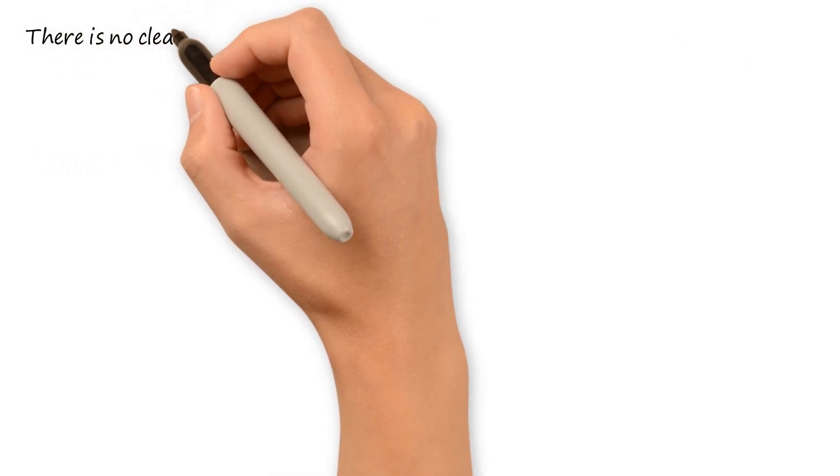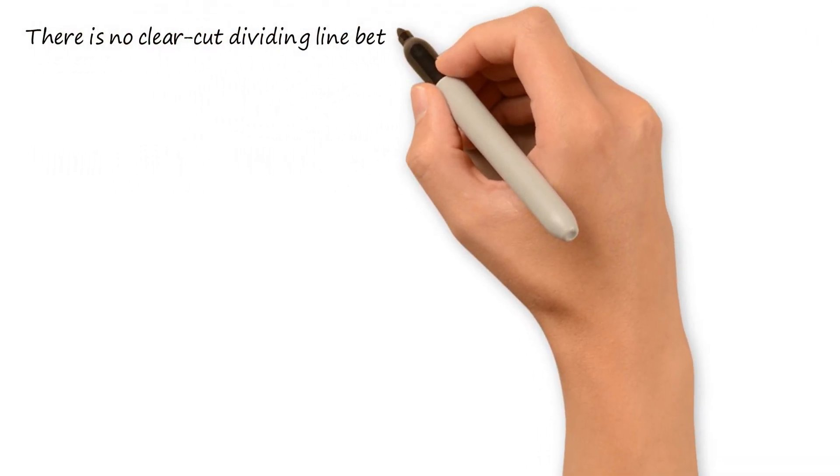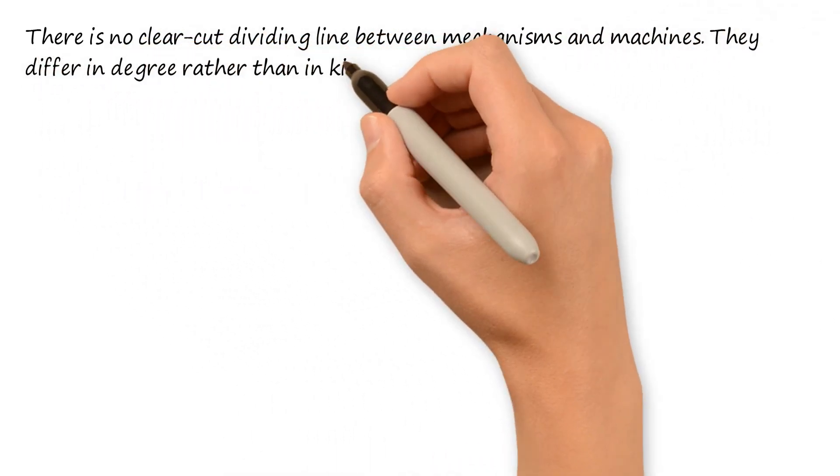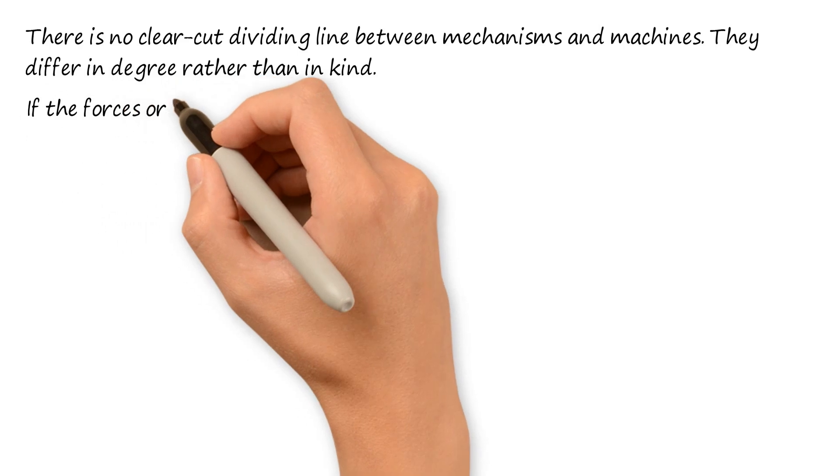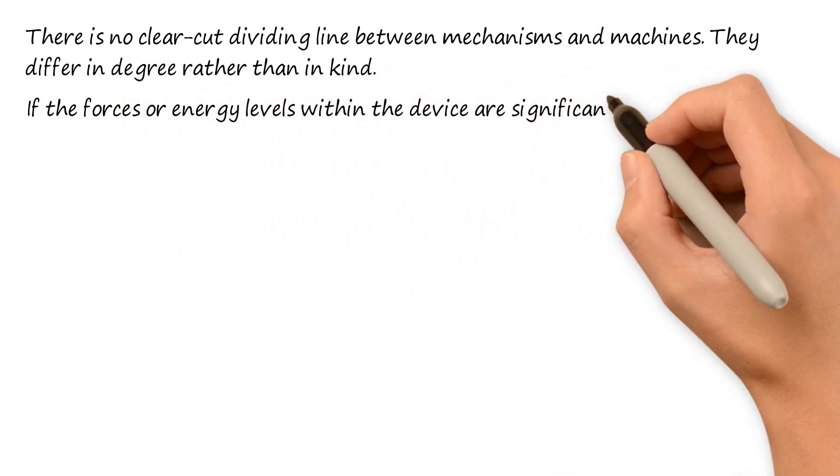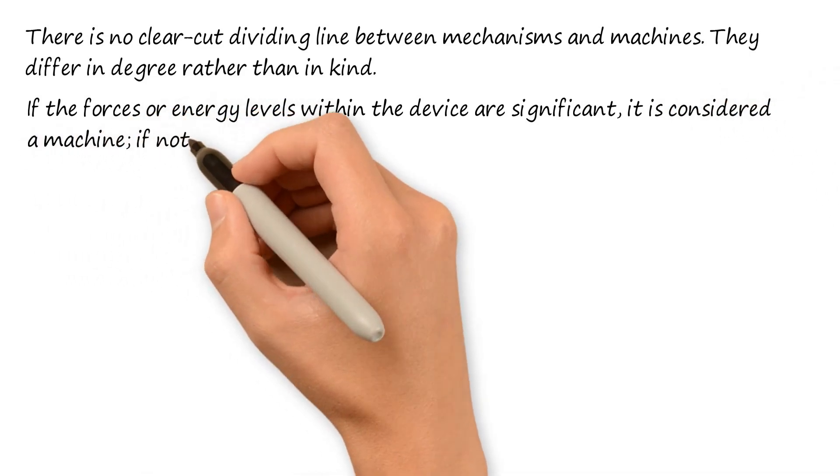There is no clear-cut dividing line between mechanisms and machines. They differ in degree rather than in kind. If the forces or energy levels within the device are significant, it is considered a machine. If not, it is considered a mechanism.